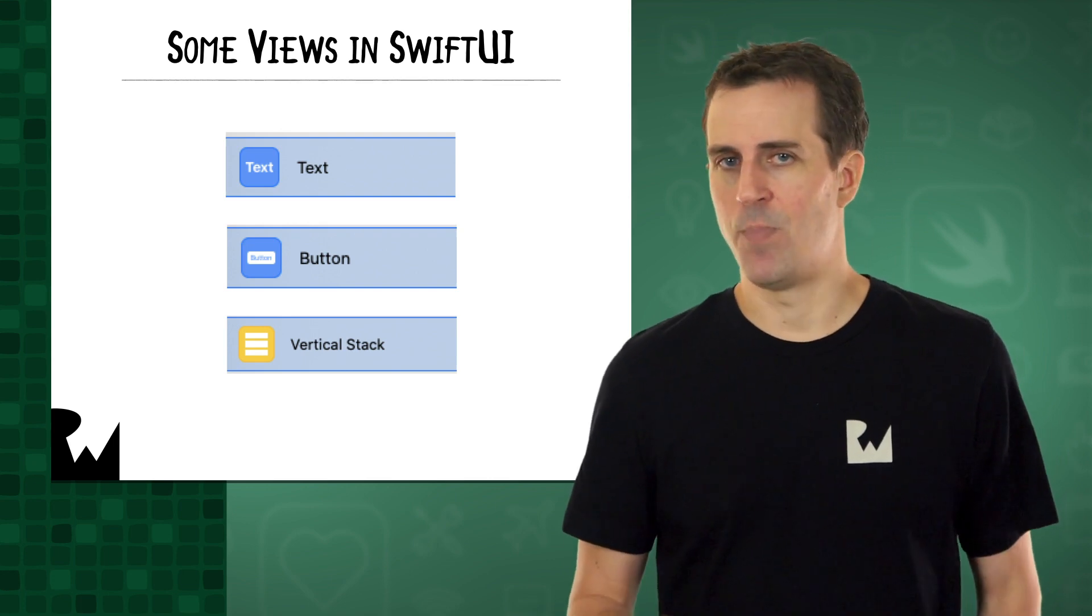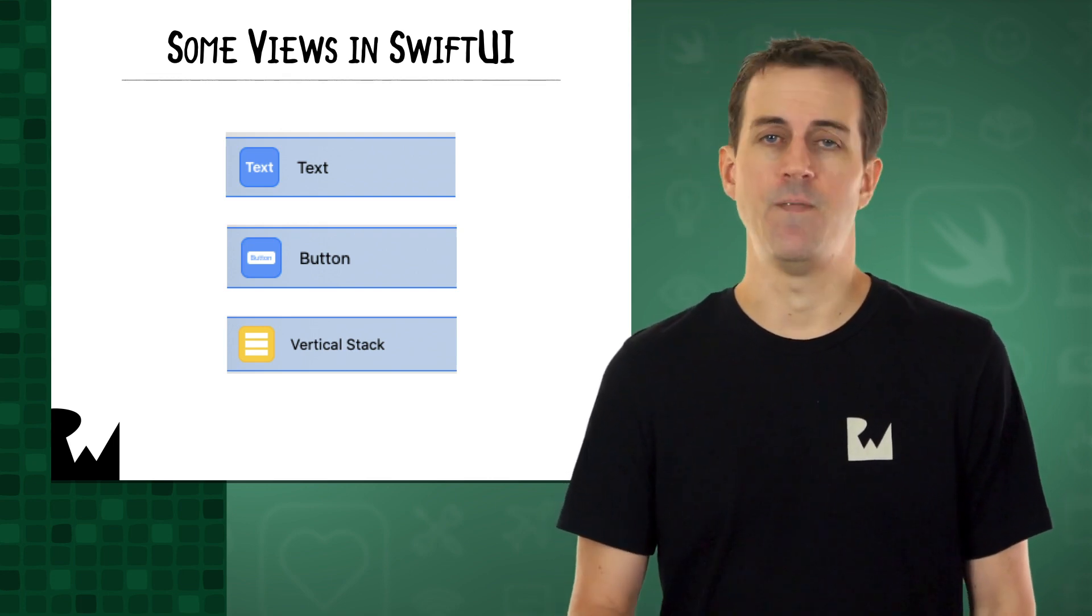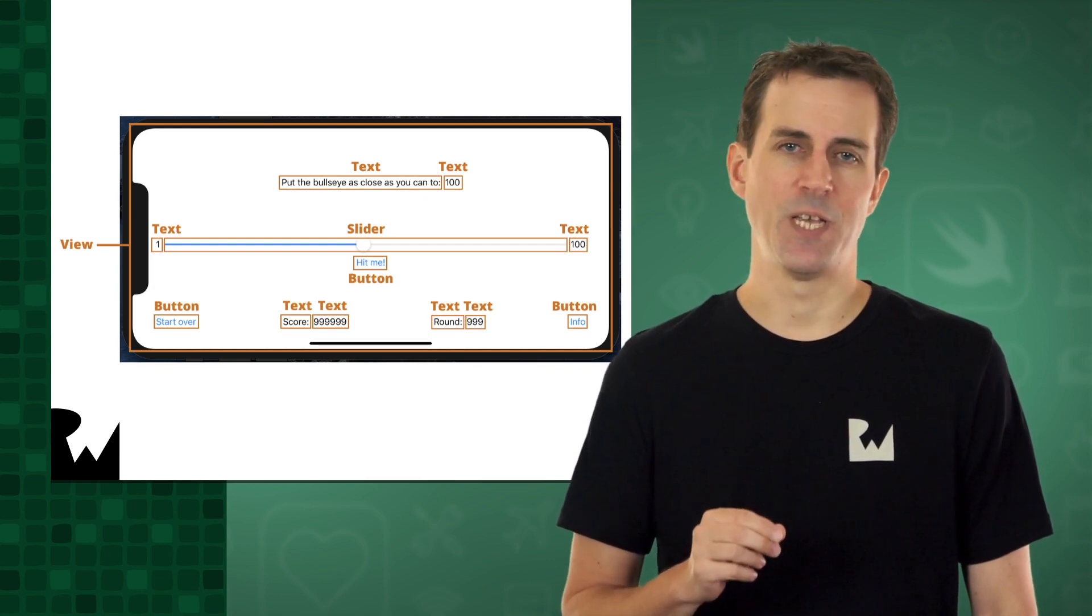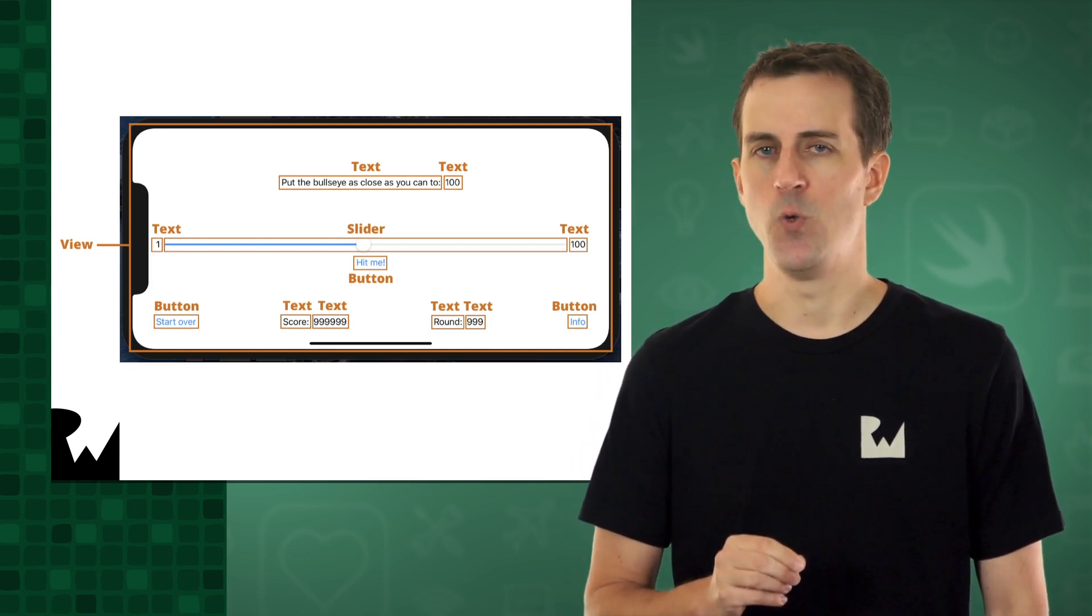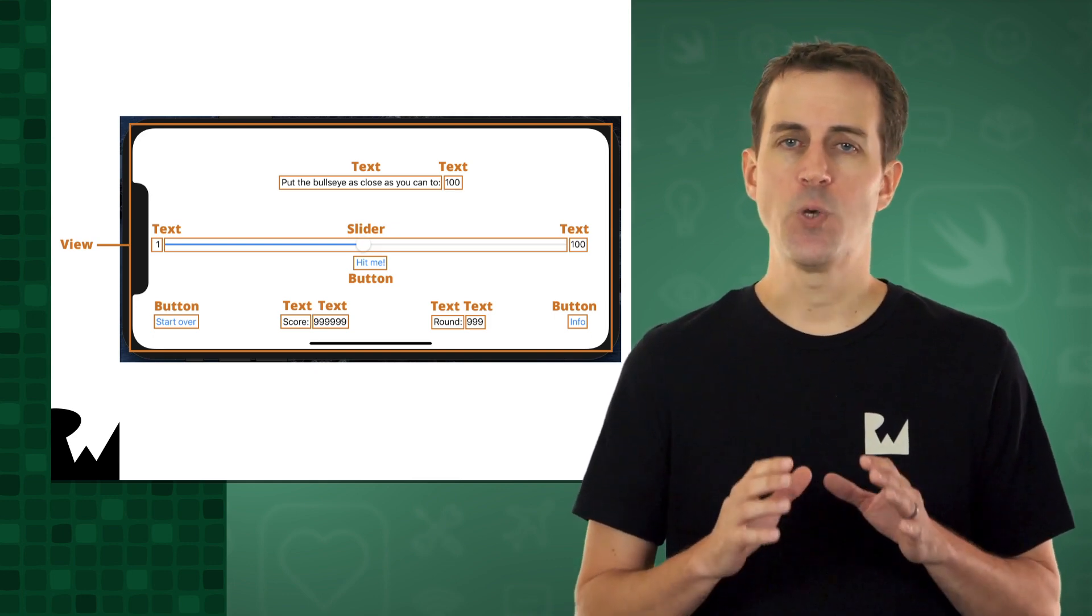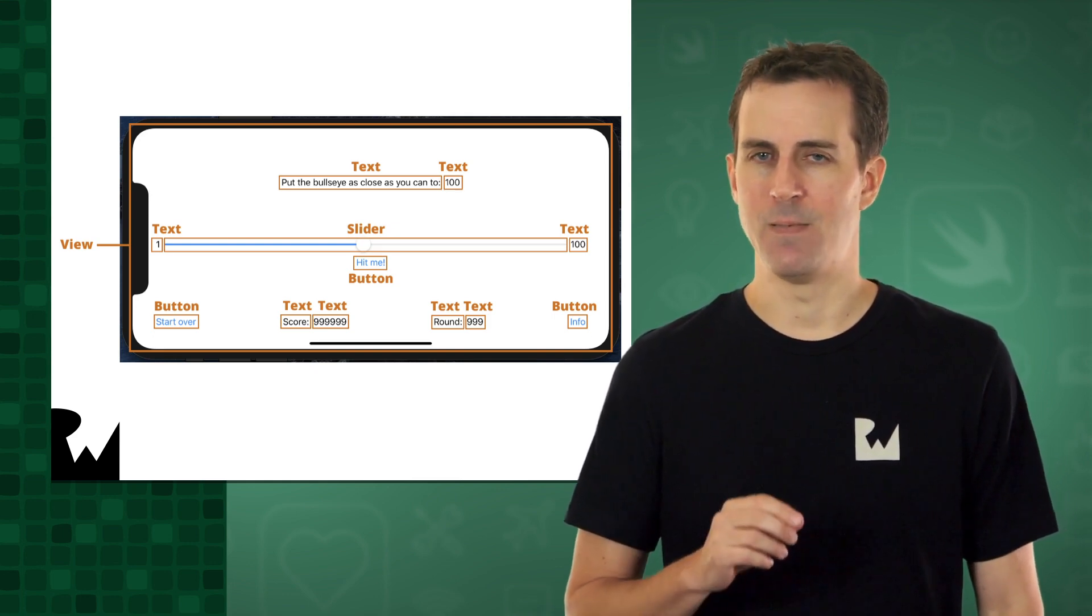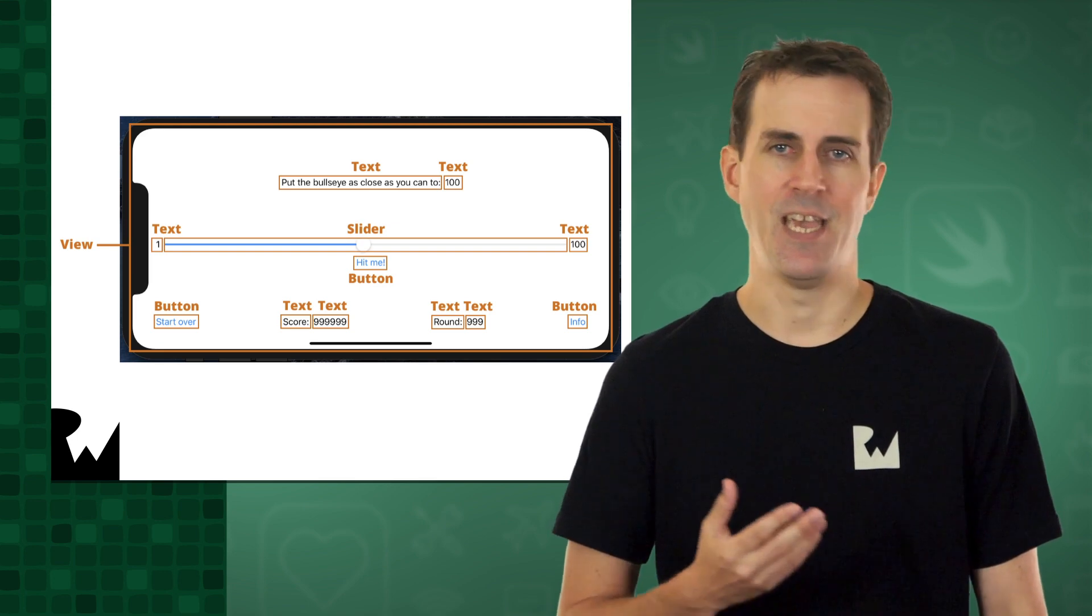Unlike the text and button views, the VStack view is invisible by default. Let's look at those Bullseye screen views again, but this time with the specific types of views called out. You can see that the user interface for Bullseye is mostly just made up of text and button views.